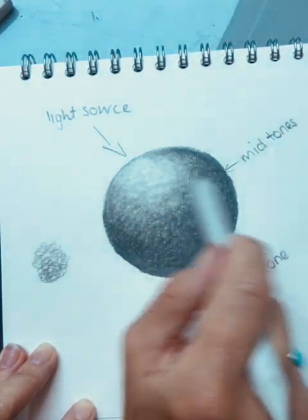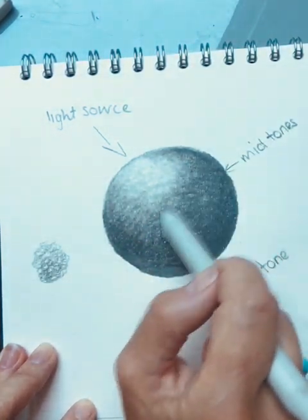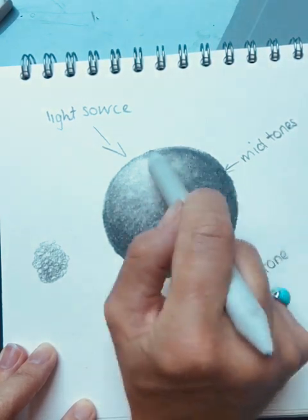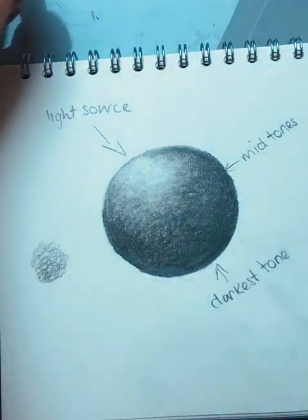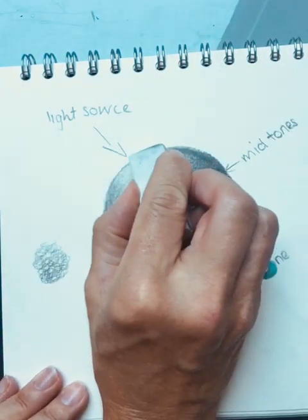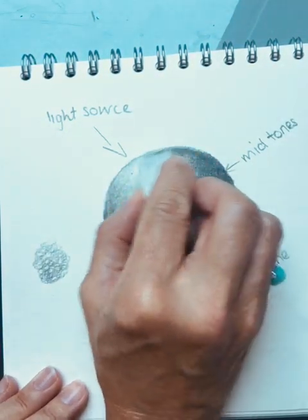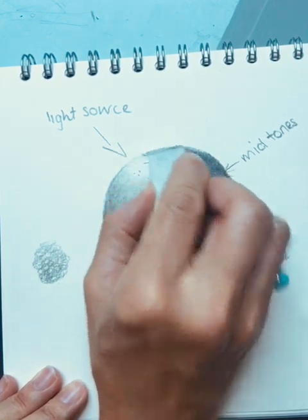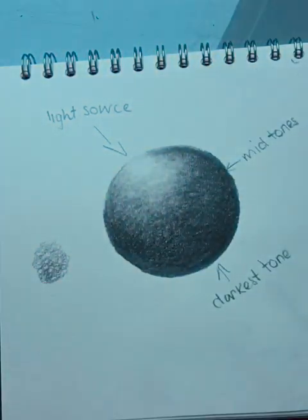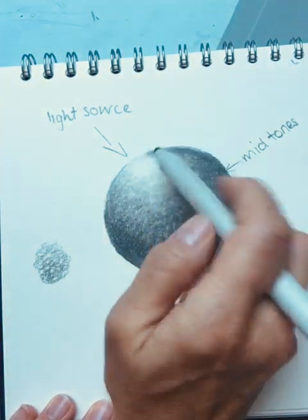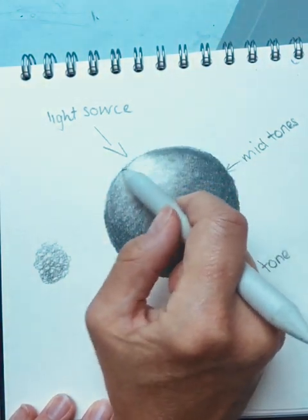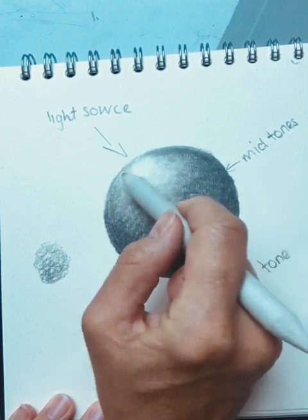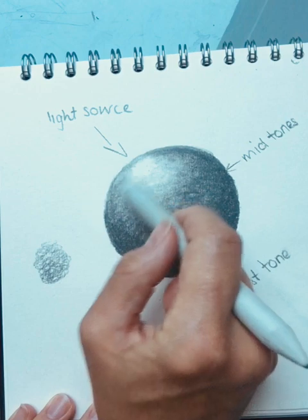So remember, guys, tonal shading in objects creates our 2D form. So I'm just going to get a rubber and just go over some of our lighter tones at the top. Blend it through a little bit. There we go.